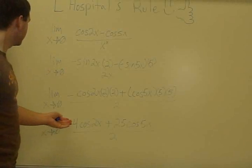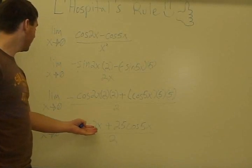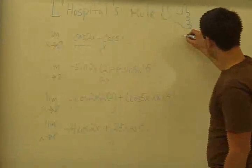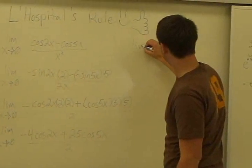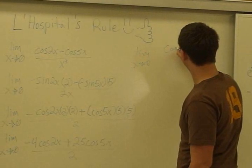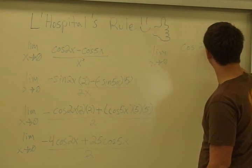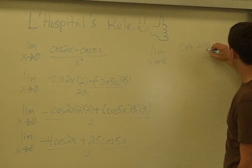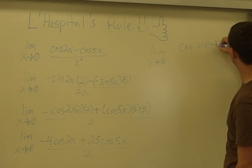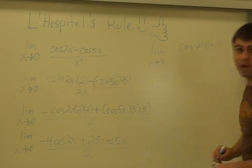Now, when we look at this, cosine of 2 times 0, let's just plug it in and find out. The cosine of the limit as x approaches 0, cosine of 2 times 0 minus or plus 25.